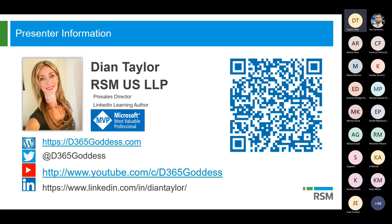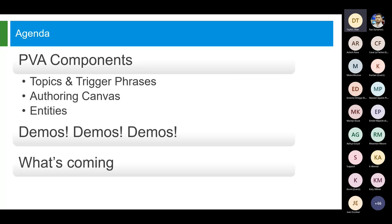What I'm going to talk about today is all of the Power Virtual Agents components. After this session, you should be able to just sign up for a trial and start building out your Power Virtual Agents. Some of the components I'll be discussing are topics — which is really that whole conversation path you can build out for your bot — and trigger phrases, what they are and how they work.